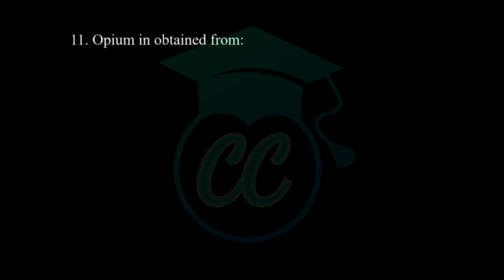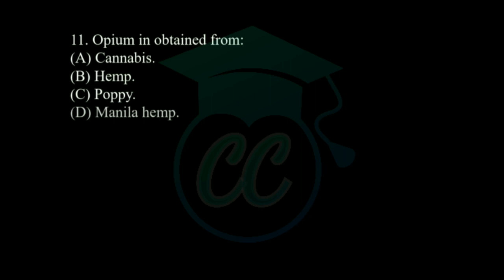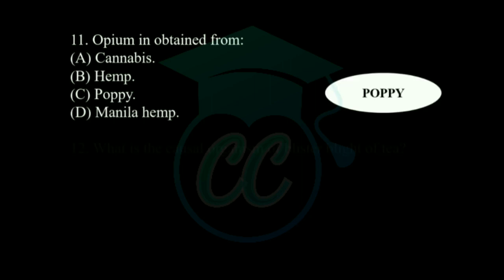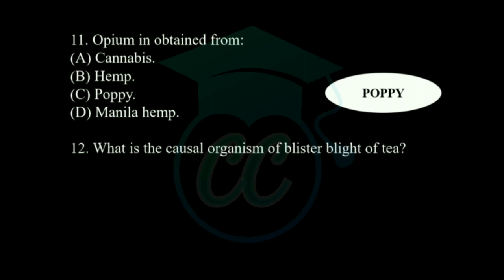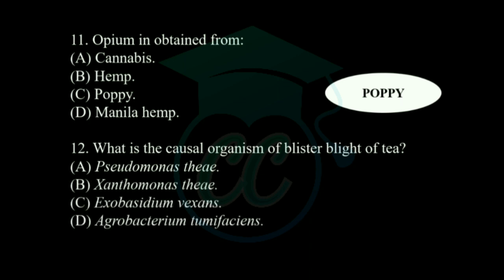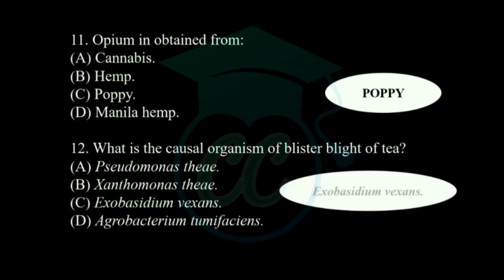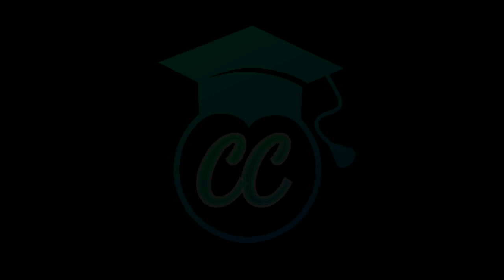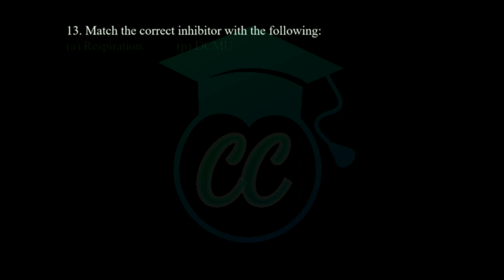Next question: opium is obtained from — options: cannabis, hemp, poppy, and manila hemp. The correct answer is opium is obtained from poppy. Next question: which is the causal organism of blister blight of tea? Options: Pseudomonadesia, Santomonadesia, Exobasidium vexans, and Agrobacterium tumefaciens. The causal organism of blister blight of tea is Exobasidium vexans.